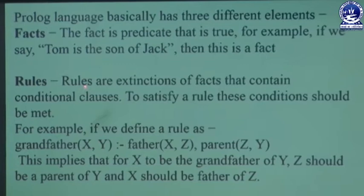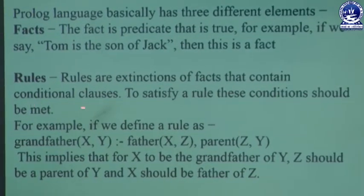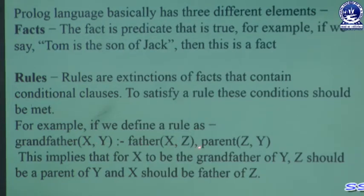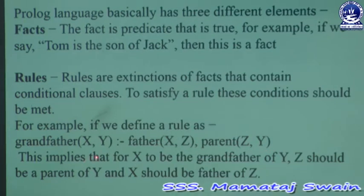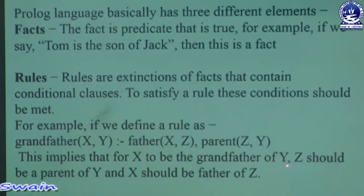The next element is rules. Rules are extensions of facts that contain conditional clauses. To satisfy a rule, these conditions should be met. For example, if we define a rule as grandfather(X, Y) implies father(X, Z) and parent(Z, Y), which means for X to be the grandfather of Y, Z should be a parent of Y and X should be the father of Z. This is a rule.